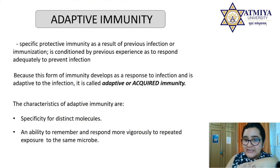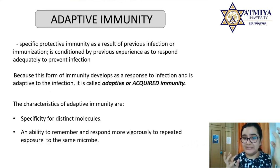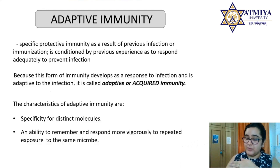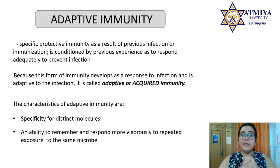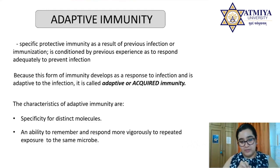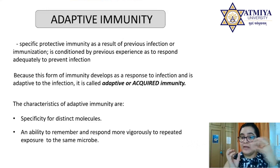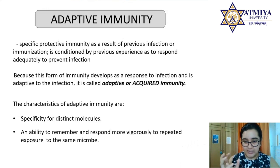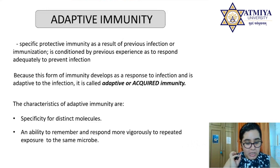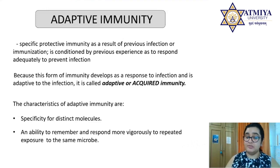Moving on to the more sophisticated arm — adaptive or acquired immunity. This is a specific protective immunity that occurs as a result of previous infection or immunization, conditioned by previous experience to respond adequately and prevent or treat infection. Because it develops as a response to infection and is acquired during a lifetime, it's called adaptive immunity. It has specialized surface receptors that recognize the threat and elicit a specific response, and it remembers past pathogens to respond more vigorously the next time.